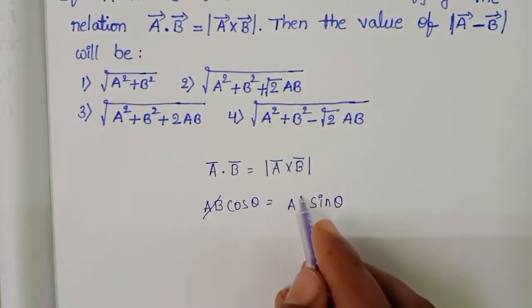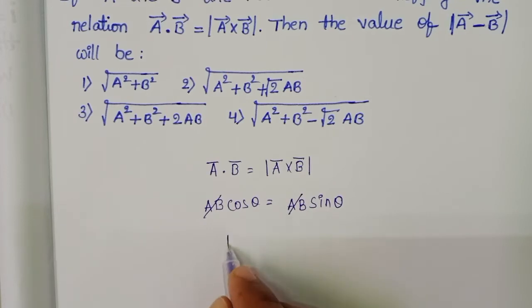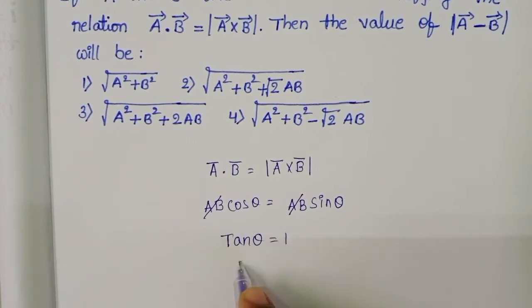And from this, sin over cos, tan theta equals 1, and theta equals 45 degrees.